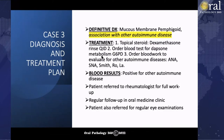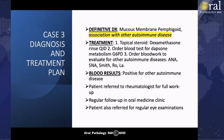I ordered blood tests for dapsone — a steroid-sparing drug that works well for pemphigoid — but you need to make sure the patient can metabolize it, so I ordered a G6PD blood test. I also ordered blood work to look for other autoimmune diseases: ANA, SNA, Smith, Ro, and La. The blood results came back positive for another autoimmune disease, so I referred the patient to a rheumatologist for full workup and regular follow-up in the oral medicine clinic. I also referred the patient for regular eye examinations, as mucous membrane pemphigoid can affect eye mucosa and lead to scarring and symblepharon.